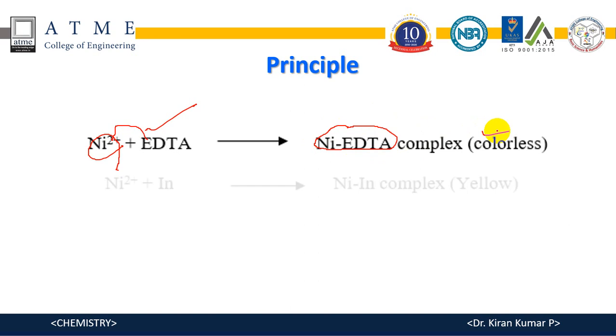We use an indicator that is muroxide indicator which initially reacts with nickel to form nickel indicator complex and the color of the complex is yellow in color. So nickel and muroxide react together to form yellow complex.